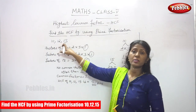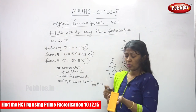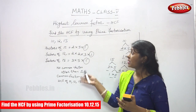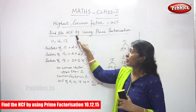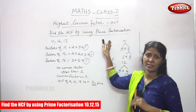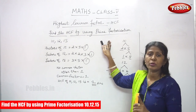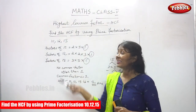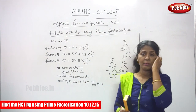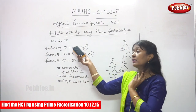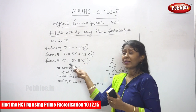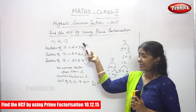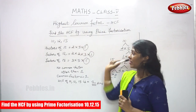To repeat: in the previous sums we found the HCF using the prime factorization method but only for 2 numbers. Here we are finding HCF for 3 numbers — that is 10, 12, and 15 — using the prime factorization method.